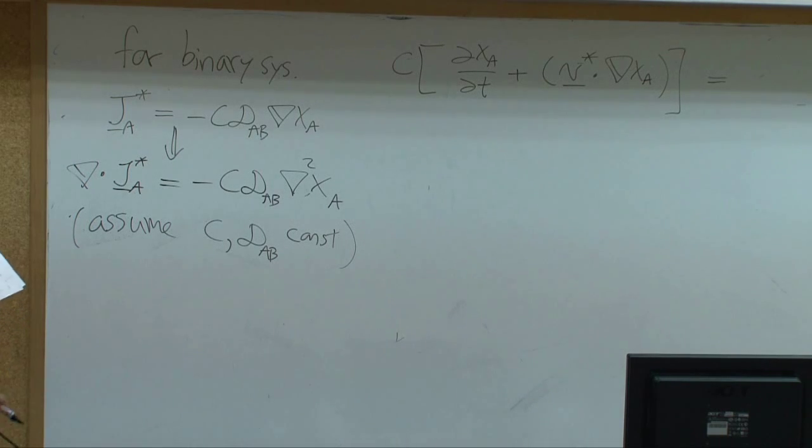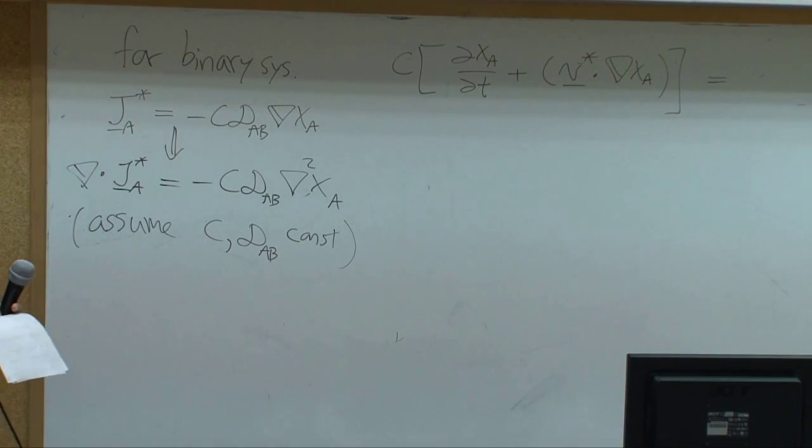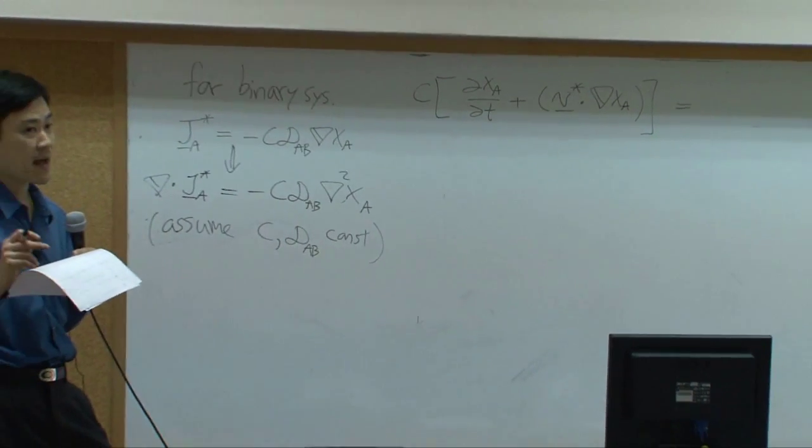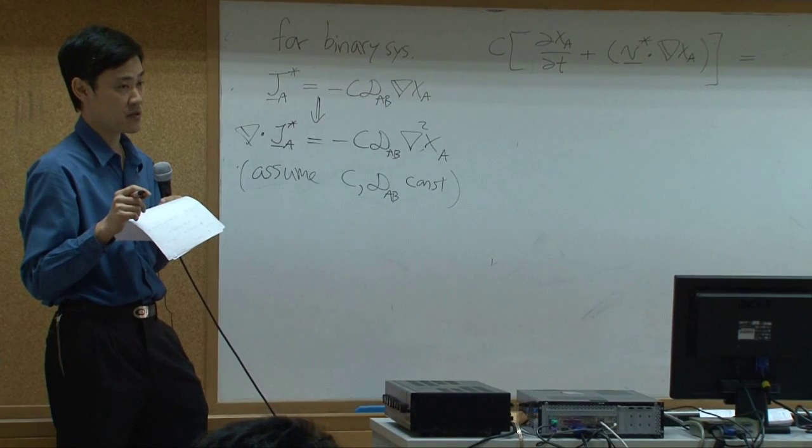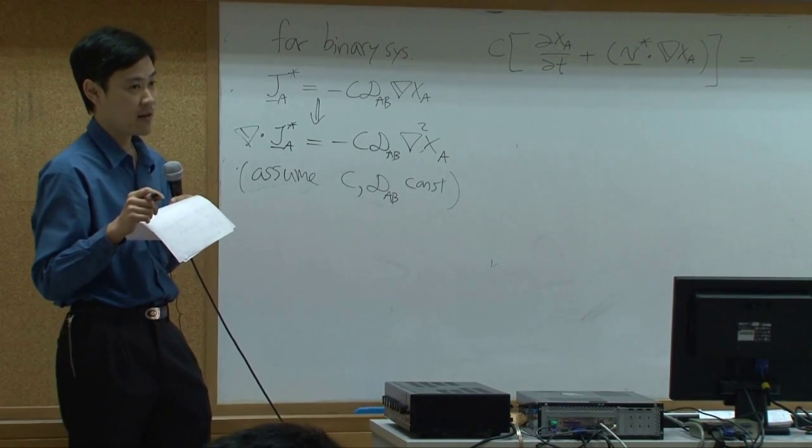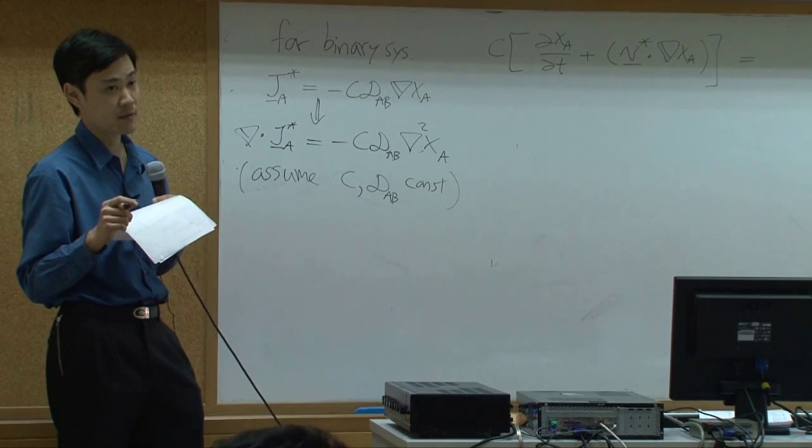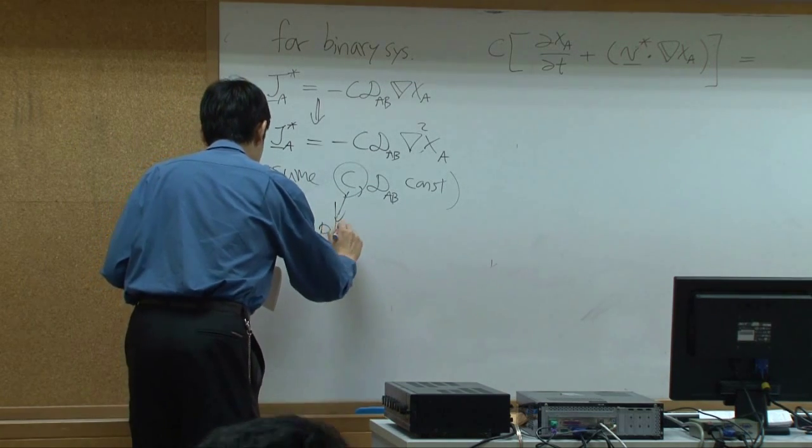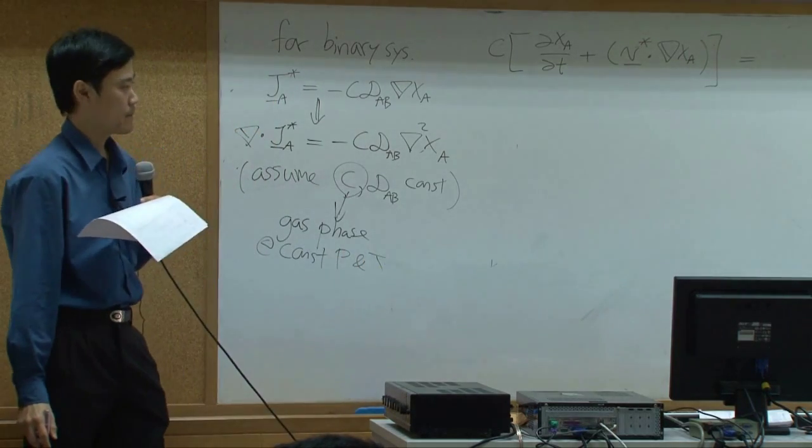You can do this from here to here under assumption that you have constant total concentration and constant diffusivity. How can we assume it? In which condition will total concentration be constant? We have seen it before. Whenever you have gas phase with constant pressure and constant temperature, no matter how many species you have, as long as temperature and pressure are constant, then total concentration will be constant according to ideal gas law. So in this case, c constant is normally applied for gas phase at constant pressure and temperature.